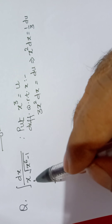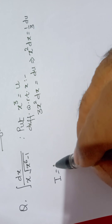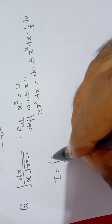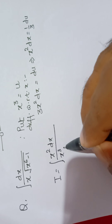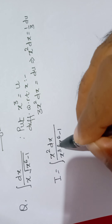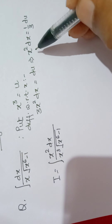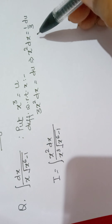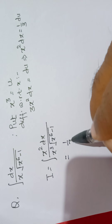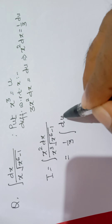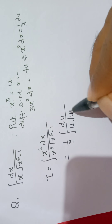Our integration is dx upon x into under root x to the power 6 minus 1. First rationalize it by x², so it should be written as x² dx divided by x cube into under root x to the power 6 minus 1. Now apply the substitution: the numerator x² dx equals 1 by 3 du, and x cube is u, into under root u squared minus 1.